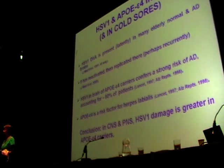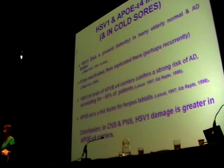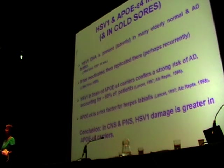We found also that herpes simplex virus in the brain of people who carry an ApoE4 allele — which confers a strong risk of Alzheimer's disease and accounts for about 60% of patients — was particularly significant. Very interestingly, we found that ApoE4 was the strongest factor for herpes labialis, cold sores. So we conclude that in both CNS and PNS, virus damage is greater in ApoE4 carriers.